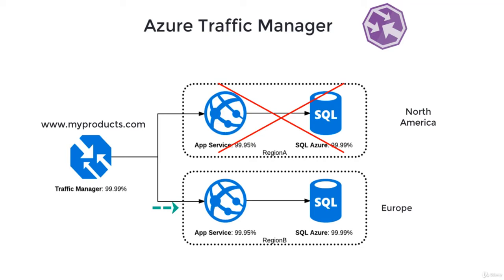Traffic Manager helps improve the availability of mission-critical applications by constantly monitoring endpoints in Azure and providing automatic failover when an endpoint goes down. It also improves responsiveness by serving users with the service closest to them — for example, someone in Australia will be directed to the data center hosted in Australia, not East US. Additionally, during service maintenance or upgrades, Traffic Manager detects that and sends traffic to a different region. You can also combine on-premise and cloud-based applications, since Traffic Manager supports external non-Azure endpoints, enabling hybrid cloud and on-premise deployments.